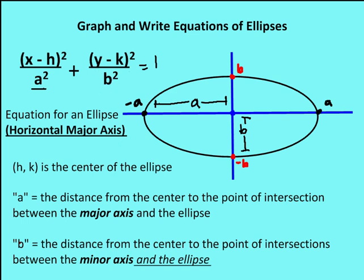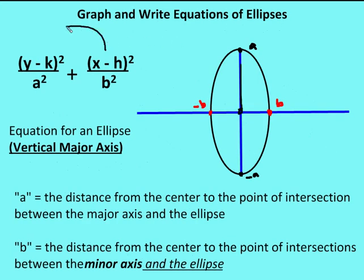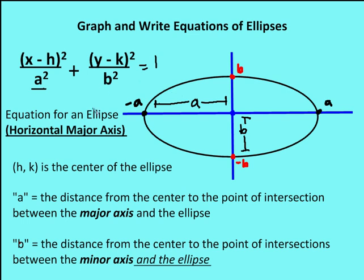With a vertical major axis, we rotate the two terms. Before with a horizontal major axis, (x − h)² was first and (y − k)² was second; for the vertical major axis we flip those. With the equation for an ellipse, you always want to set it equal to one. If you get a problem with a value greater than one, divide both sides by that value to get it equal to one. So you always want one on the right-hand side — that's what your ellipse equation equals.